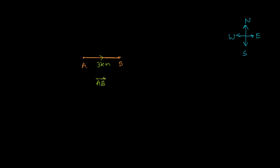Again, the same guy moves from B straight towards the north, covering four kilometers and reaching point C. So BC is another displacement vector. In our entire course, the guy stood at A, moved east to B making displacement vector AB equal to three kilometers, and then from B moved north to C covering four kilometers, represented by vector BC.